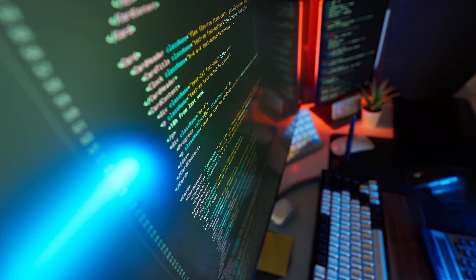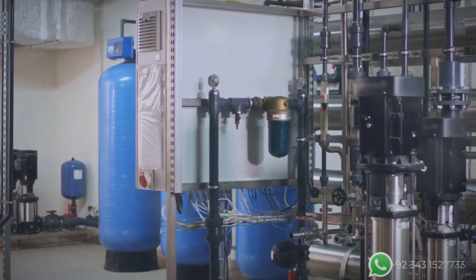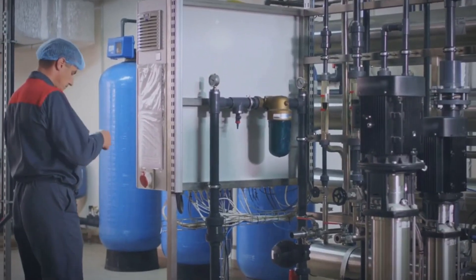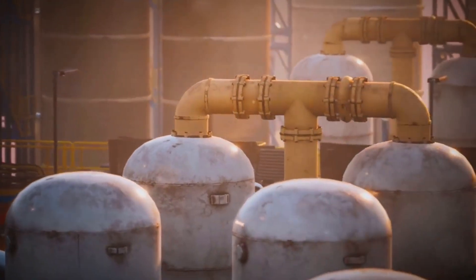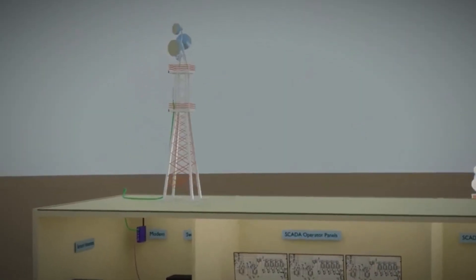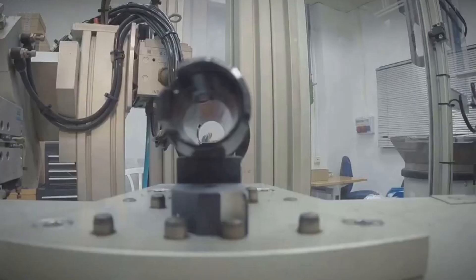OT security is focused on availability and integrity. If an industrial control system gets disrupted, it can lead to physical damage, financial losses, and in some cases, even loss of life. That makes cybersecurity and OT a completely different ballgame.